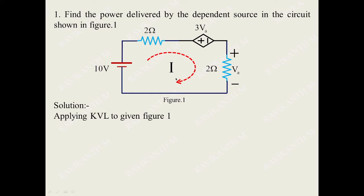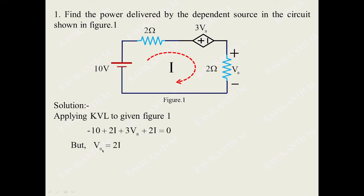We assume the current direction is clockwise and apply KVL, which gives us: minus 10 plus 2i plus 3Va plus 2i equals 0. With this we have framed one equation. We need to understand where exactly the variable Va is — Va is across 2 ohms. So the voltage across 2 ohms is, according to Ohm's law, 2 times i, giving Va equals 2i.